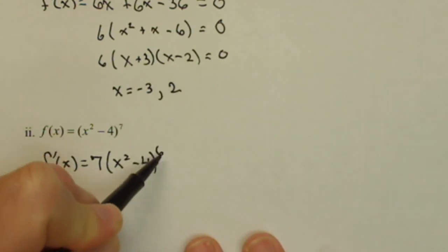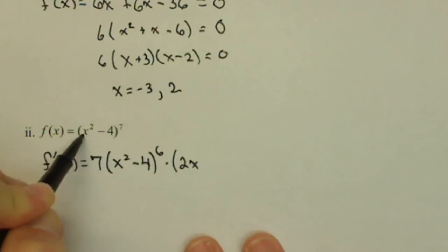(x² - 4)⁶ times the derivative of the inside, which is 2x minus 0, so just 2x.